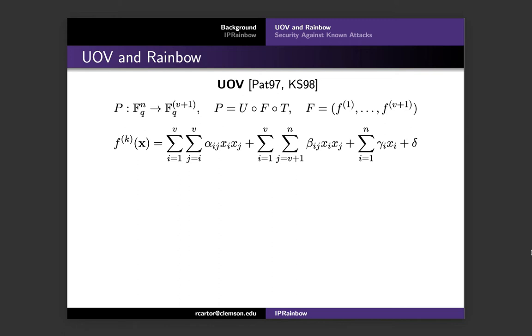In UOV, our central map will be composed of polynomials that contain two types of variables. Specifically, we call these oil variables and vinegar variables. An input vector x will be of length n. So the first v elements are considered to be vinegar variables, and the remaining n minus v elements are oil variables. In the unbalanced oil and vinegar scheme, it is required that the number of vinegar variables is sufficiently larger than the number of oil variables.